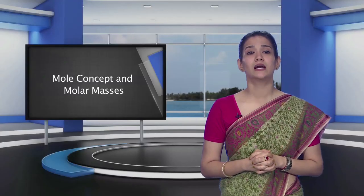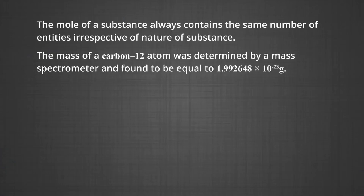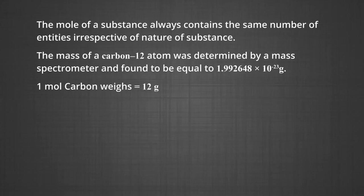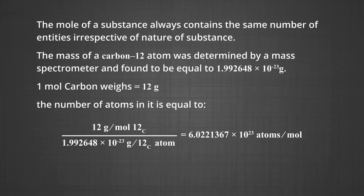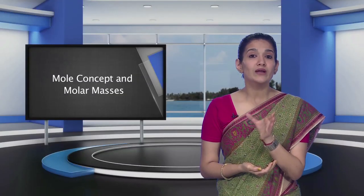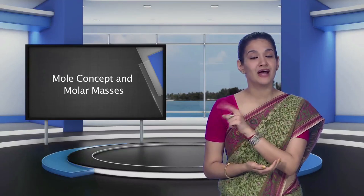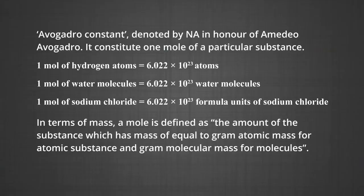To determine this number precisely, the mass of a carbon-12 atom was determined by a mass spectrometer and found to be 1.992648 × 10⁻²³ grams. Knowing that one mole of carbon weighs 12 grams, the number of atoms in it equals 12 g/mol ÷ 1.992648 × 10⁻²³ g = 6.022137 × 10²³ atoms per mole. This number is known as the Avogadro's constant, denoted Nₐ, in honour of Avogadro.